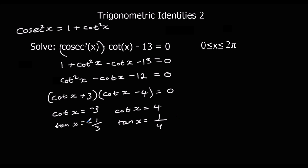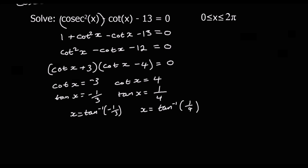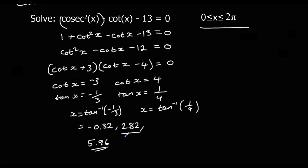Now we're going to apply arctan to both sides. We're still in radians. Shift tan of −⅓ gives −0.32. We add π to get the next answer: 2.82. And one more: 5.96. For the other one, shift tan of ¼ gives 0.24, and adding π: 3.39.